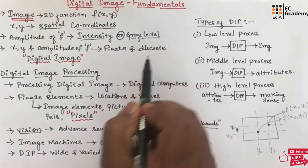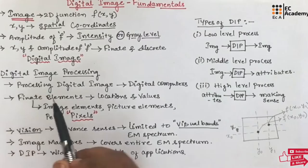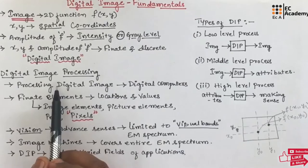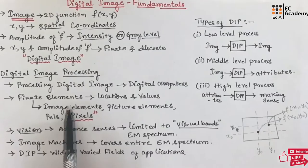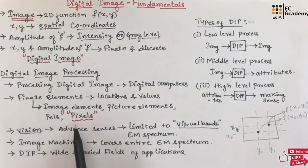Such type of image is known as a digital image. Digital image processing refers to processing a digital image by means of a digital computer. These digital images consist of a finite number of elements with particular locations and values. These elements are known as image elements, picture elements, pels, or most commonly known as pixels.